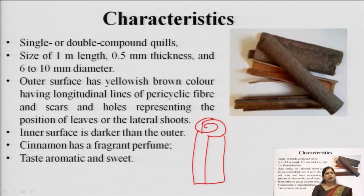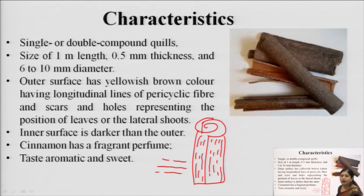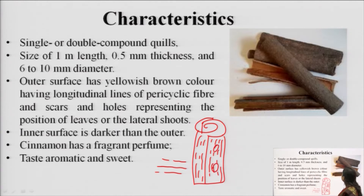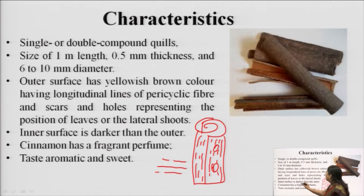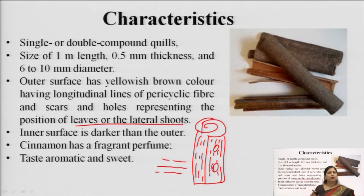The outer surface has a yellowish brown color with longitudinal lines — straight lines running along the length of the bark. These lines are basically the pericycles. At some places there are scars or holes on the surface of the cinnamon bark, representing the position of leaves or lateral shoots that were present on the tree. When the bark was removed, those remains are visible as scars and holes on the surface.